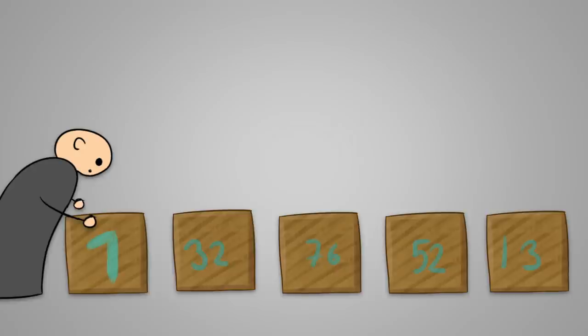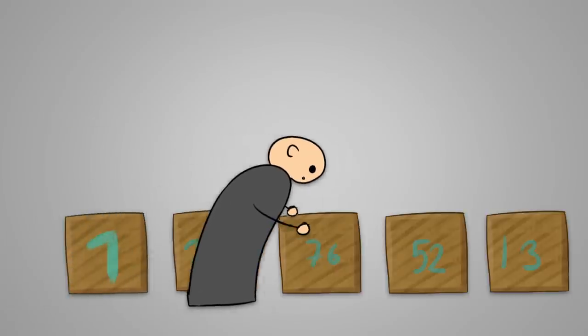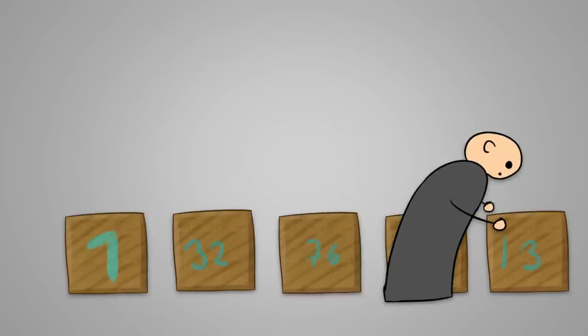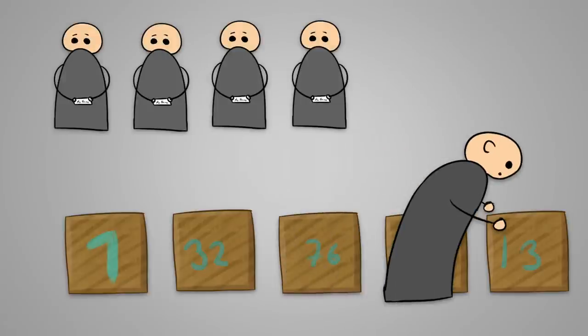This is because the strategy works on a series of loops. For example, prisoner 1 goes through the boxes 1, 32, 76, 52, and then finds his name in box 13. Every prisoner's name within this loop is also guaranteed to find his own name because they follow through the same loop starting at the box corresponding with their number.